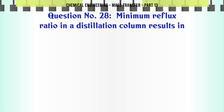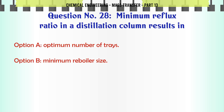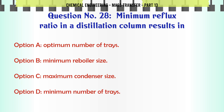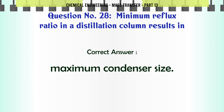Minimum reflux ratio in a distillation column results in: A. Optimum number of trays. B. Minimum reboiler size. C. Maximum condenser size. D. Minimum number of trays. The correct answer is: Maximum condenser size.